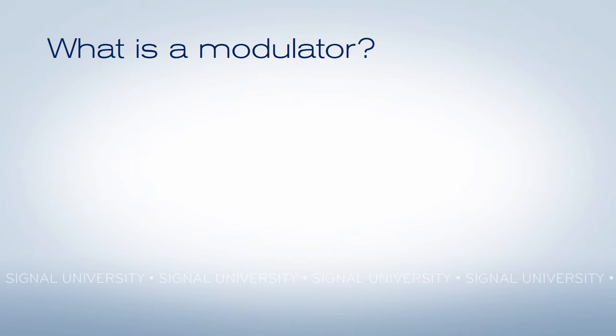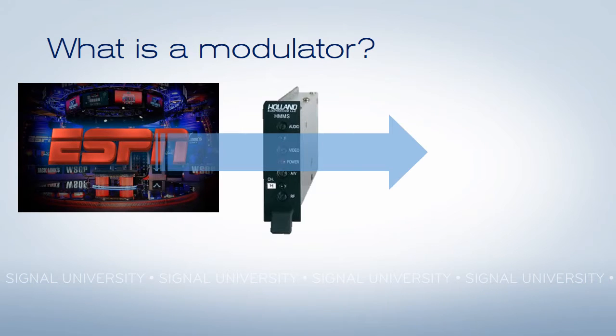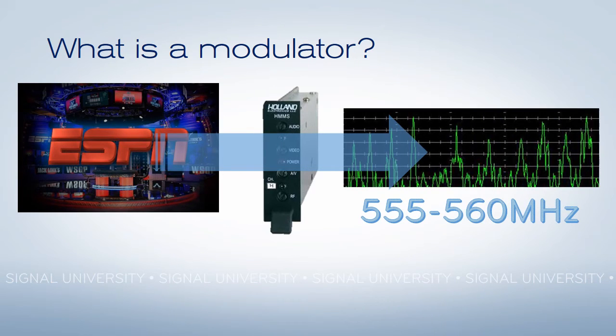A modulator is a device that takes a single video source, passes it through electronics, and then makes it fit on a very specific frequency range. 555 to 560 MHz is just an example. It can be practically any frequency range.